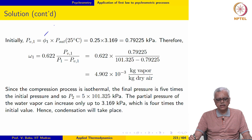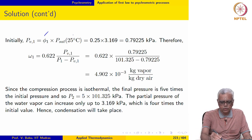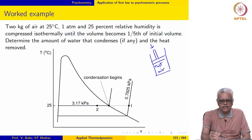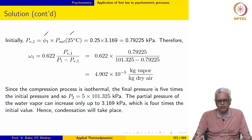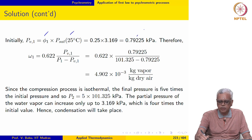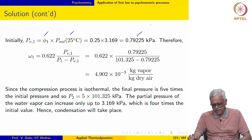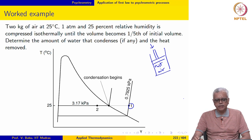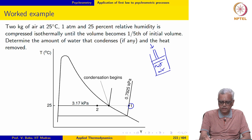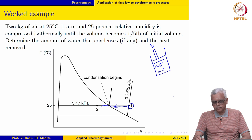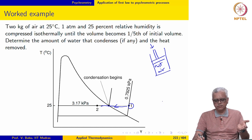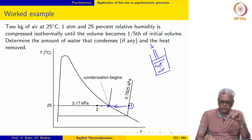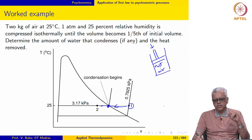The relative humidity at state 1 is 25% and the temperature is 25°C. Looking up Psat at 25°C from the temperature table, the partial pressure of water vapour is 0.79225 kPa. The process is isothermal, so we follow an isotherm on the phase diagram. If the process line crosses the saturated vapour line, water will condense. We need to find the pressure at which this crossing occurs.